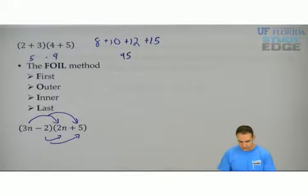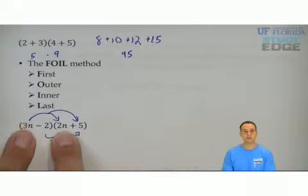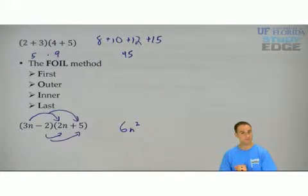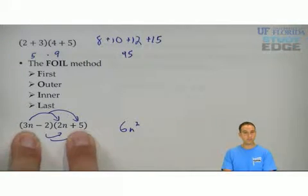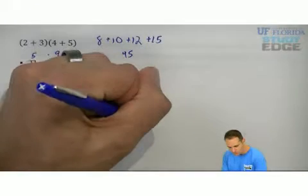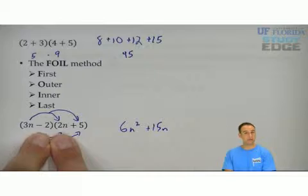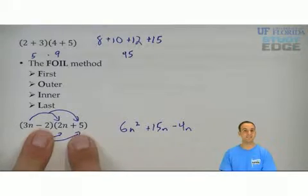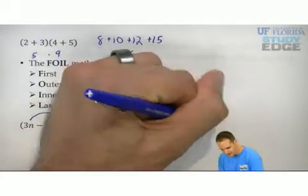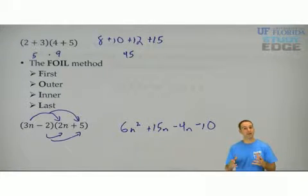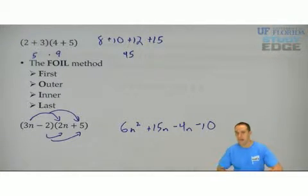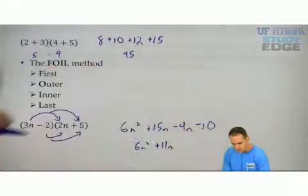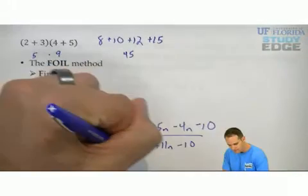This is what they call First — the first term of each. 3n times 2n: 3 times 2 is 6, n times n is n squared. Outer — the outer terms: 3n times 5 is 15n. Inner: negative 2 times 2n is negative 4n. Last — the last of each parentheses: negative 2 times 5 is negative 10. Am I done? No — I've got to combine like terms. 15n minus 4n gives you 11n.